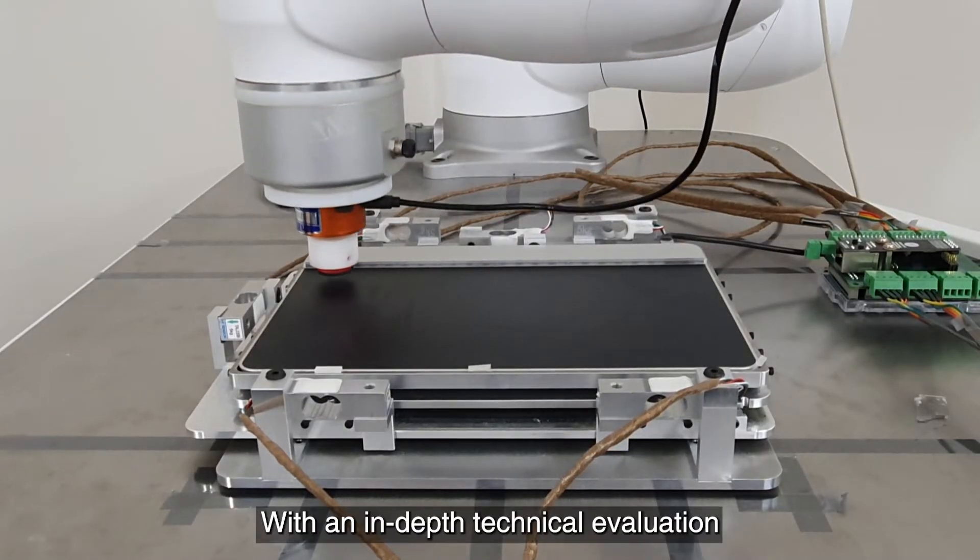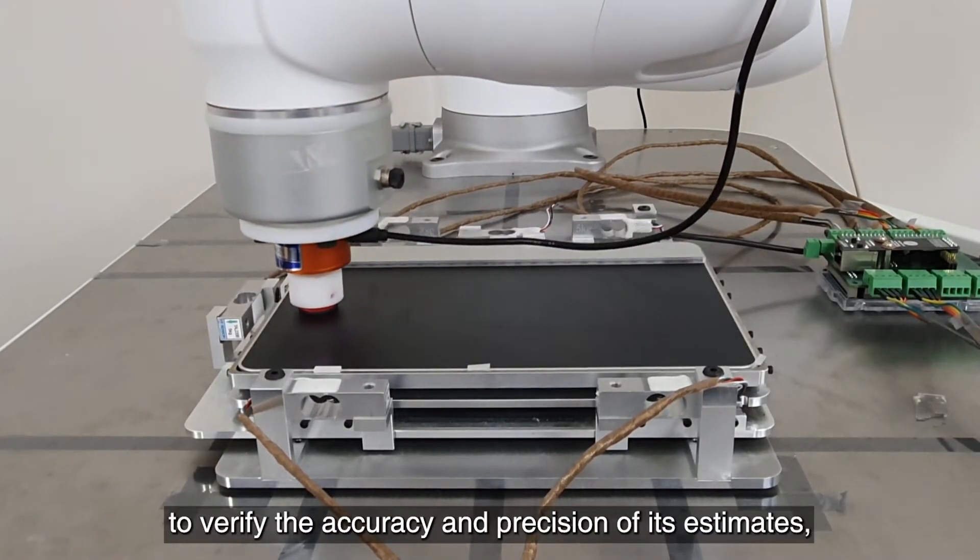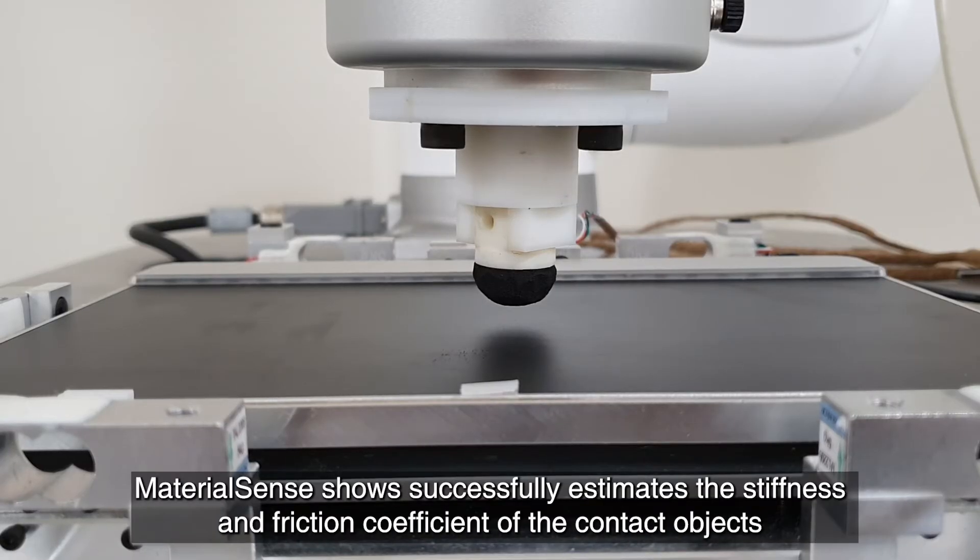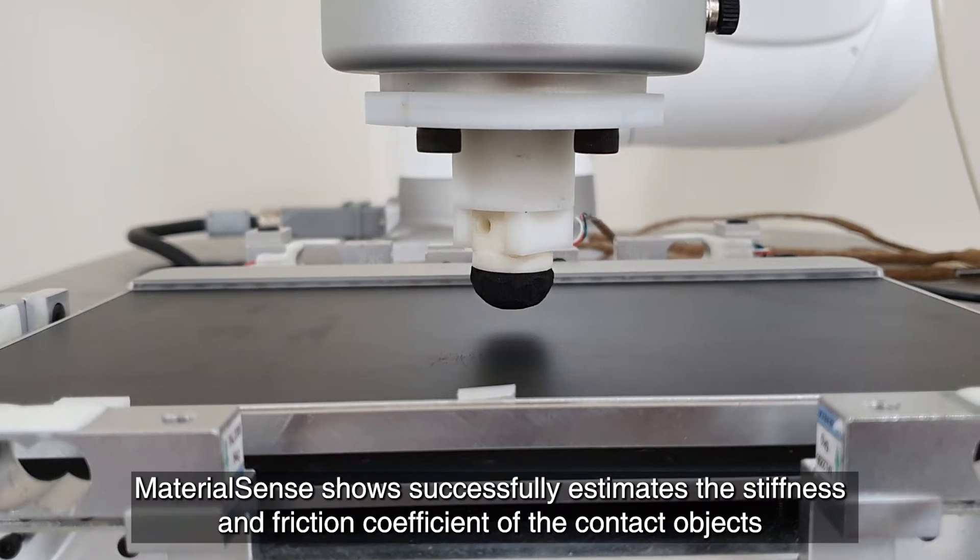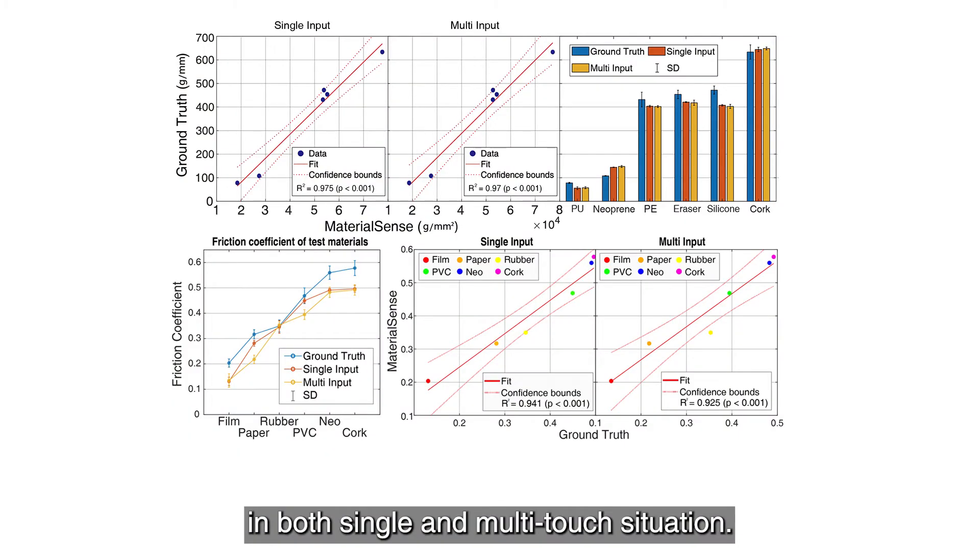With an in-depth technical evaluation to verify the accuracy and precision of its estimates, MaterialSense successfully estimates the stiffness and friction coefficient of the contact objects in both single and multi-touch situations.